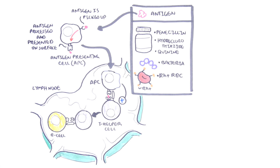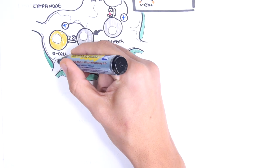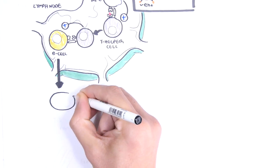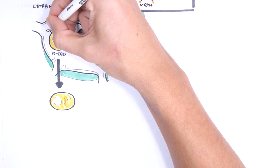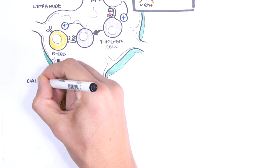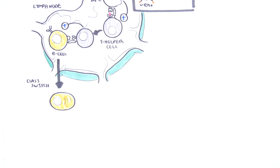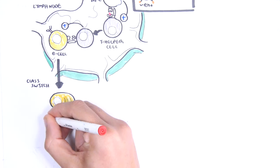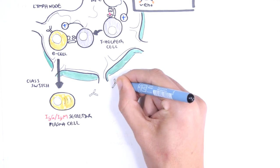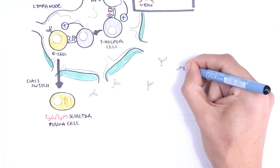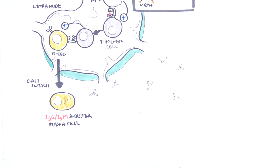The activated T helper cell will then activate specific B cells. The activated B cell will become plasma cells, and during the whole process they undergo class switching, where they change the class of their antibodies. For example, from an immunoglobulin-D antibody, it will become an IgG or IgM-secreting plasma cell. Plasma cells are the cells which produce antibodies, and the antibodies will only target the specific antigen.